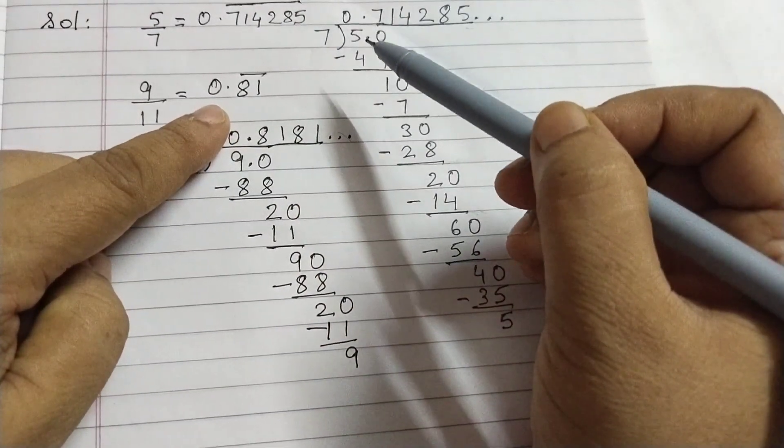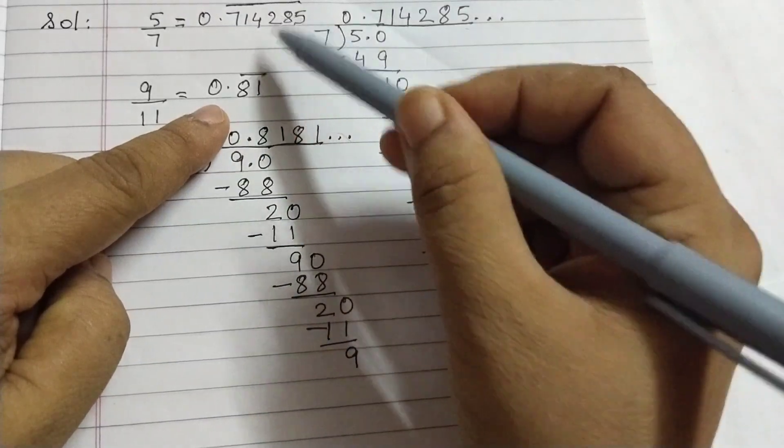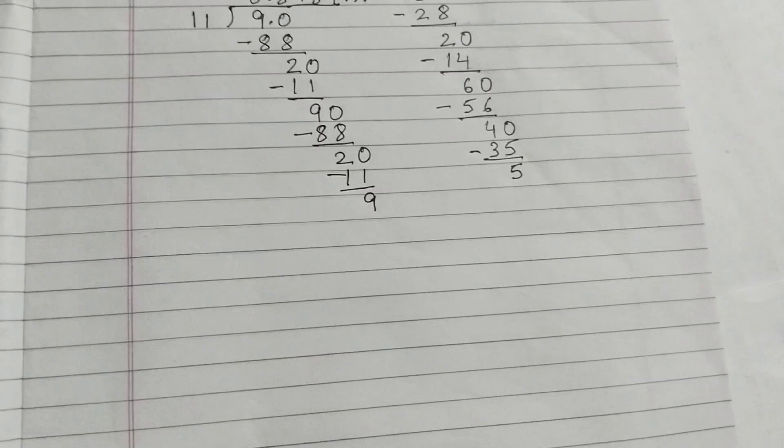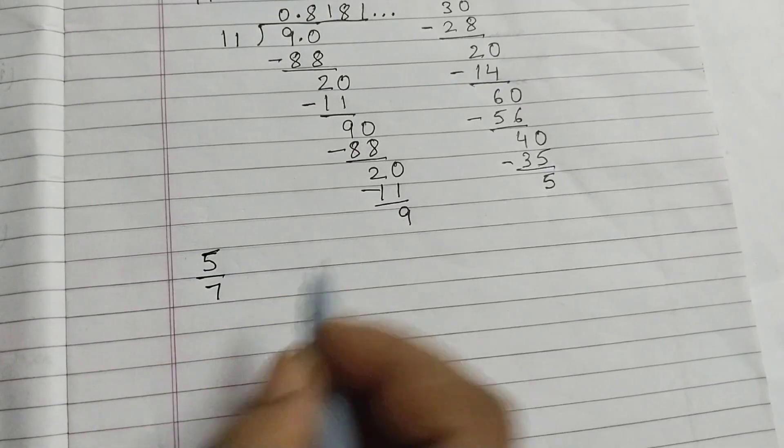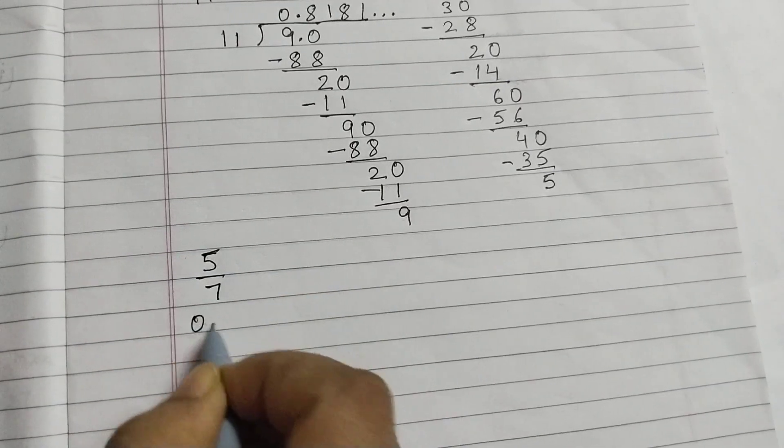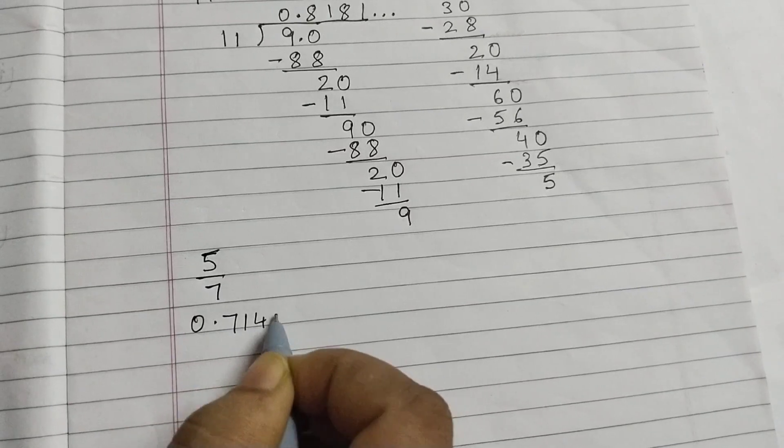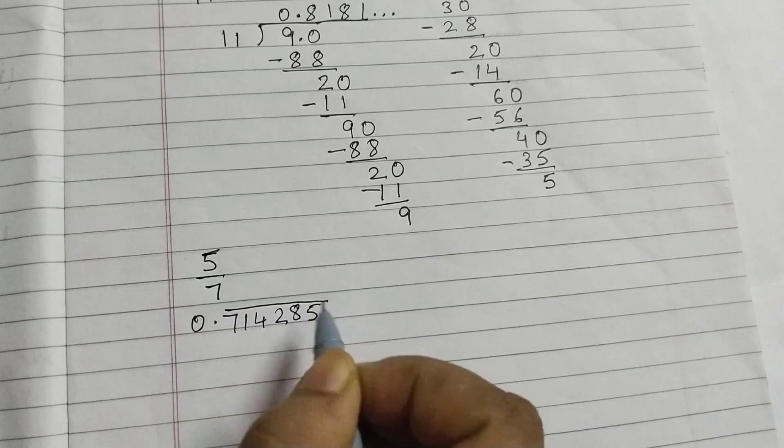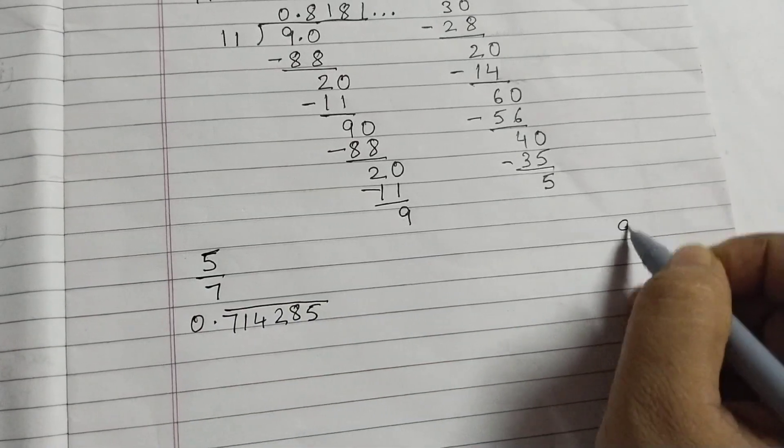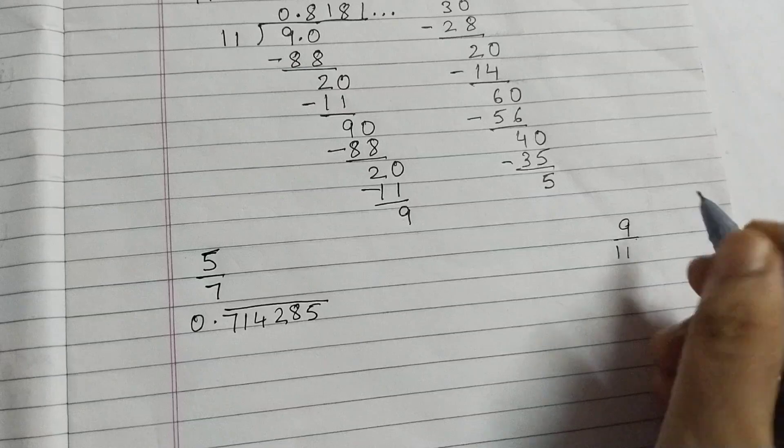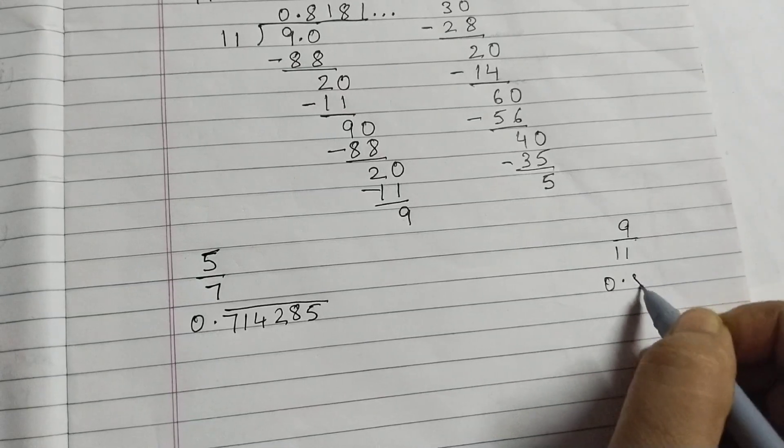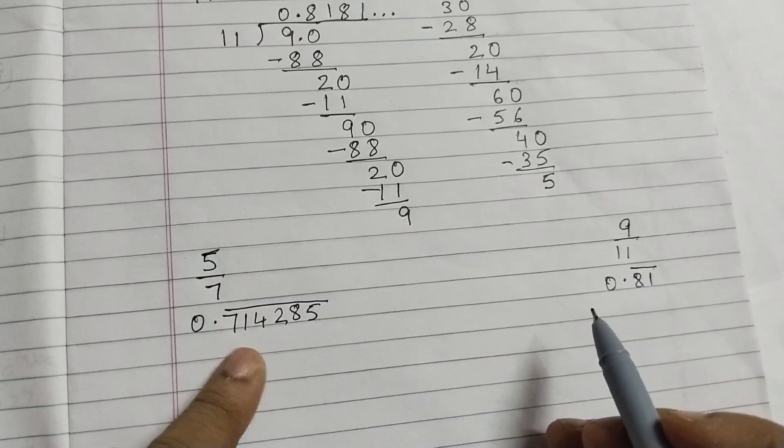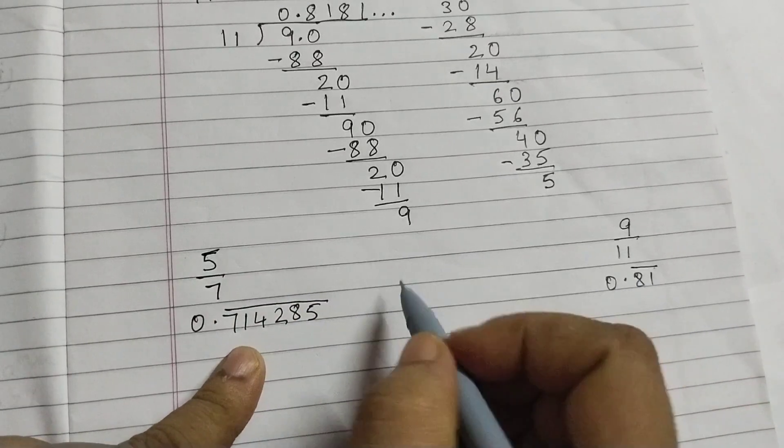Now we need to find out 3 irrational numbers between these 2 numbers. So let's write these numbers here. 5 by 7 which is equal to 0.714285 bar and we got 9 by 11. That is equal to 0.81 bar. Now we need 3 numbers in between these 2. So this is 71, we will take 72.